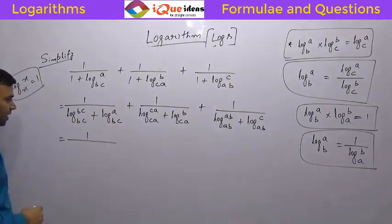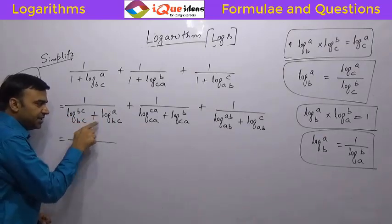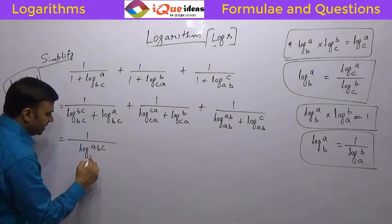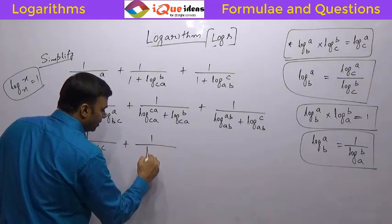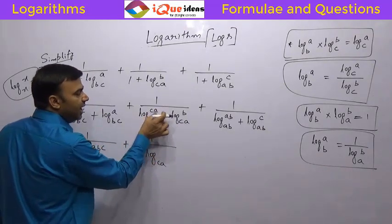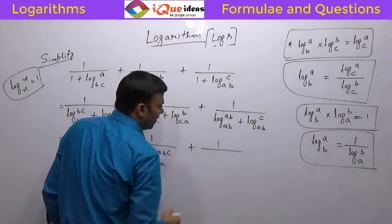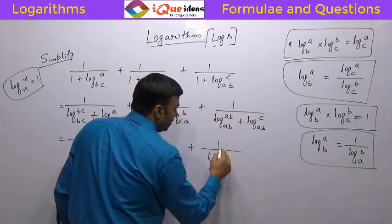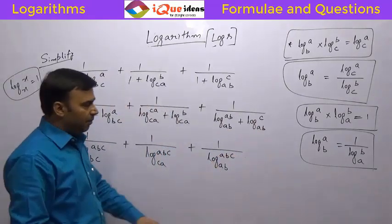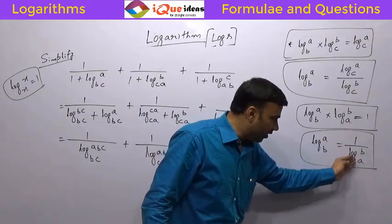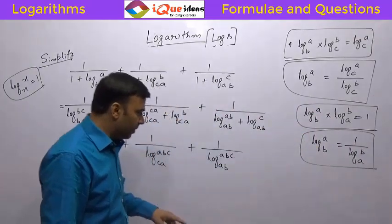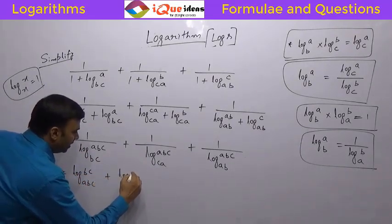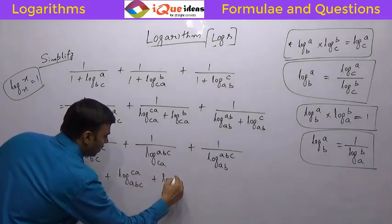Now see what happens. In the first term, bases are both BC, so the numbers multiply: BC into A becomes ABC. So it is log ABC to the base BC. In the second term, bases are both CA, so CA into B is ABC — giving log ABC to the base CA. In the third, AB into C is ABC — giving log ABC to the base AB. Now applying the rule that 1 divided by log B to the base A equals log A to the base B: the first term becomes log BC to the base ABC, the second becomes log CA to the base ABC, and the third becomes log AB to the base ABC.